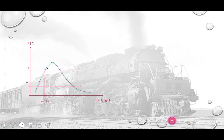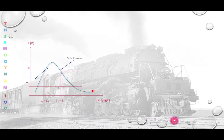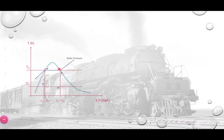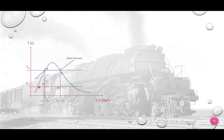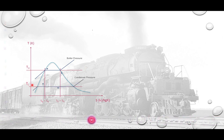This is a TS diagram. From the TS diagram you can see the saturation dome. You have two isothermal lines and two isentropic or adiabatic lines — the two isentropic processes and the two isothermal processes. You also have two pressure lines: one is the boiler pressure and the other is the constant condenser pressure line, giving you a high temperature and a low temperature.